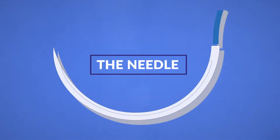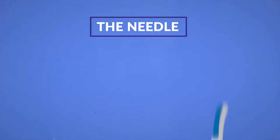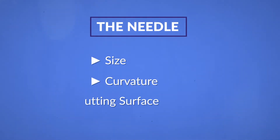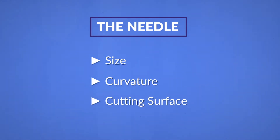This closes off my discussion of the thread and now I'll move on to the next component of the suture: the needle. Similar to the thread, the needle can be broken down and described by several attributes: the size, the curvature, and the cutting surface. Ease of use and tissue quality are going to be the deciding factors in needle selection.